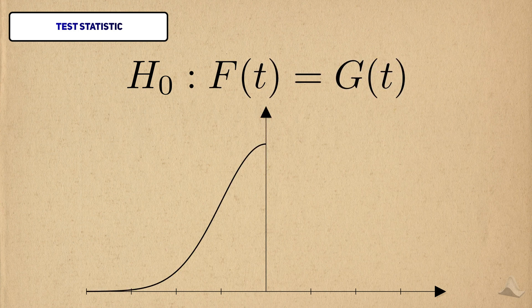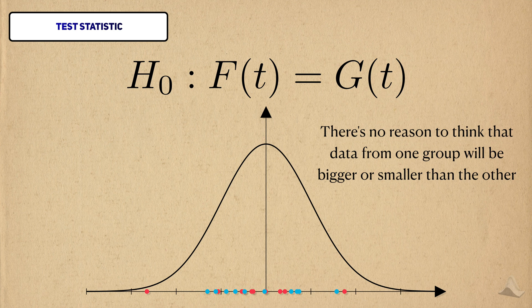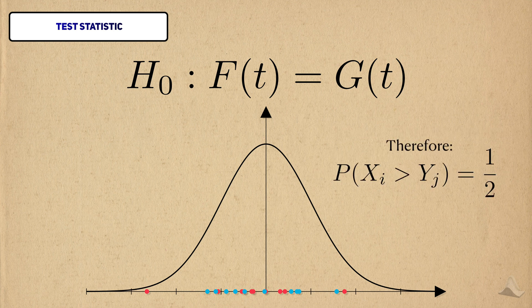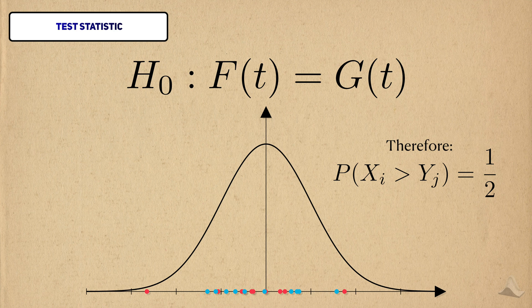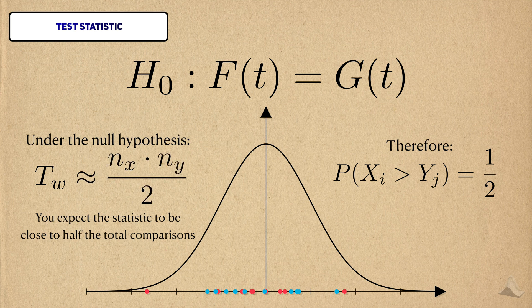Under the null hypothesis, the two groups come from the same distribution. So there's no reason for an observation from x to tend to be bigger or smaller than those in y. This means that x will be the larger value 50% of the time. The total number of comparisons that are made in this double sum are n sub x times n sub y, the sample size of x times the sample size of y. Under the null hypothesis, you would expect the statistic to be half this total.